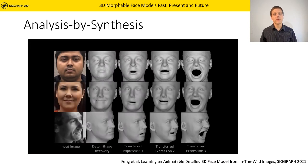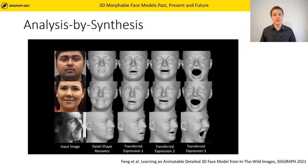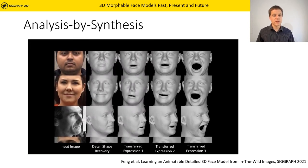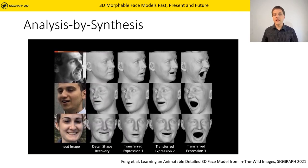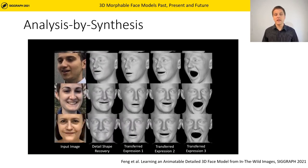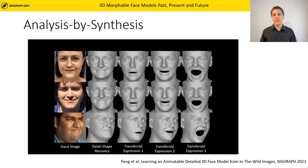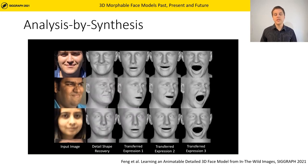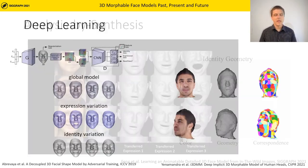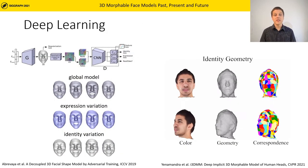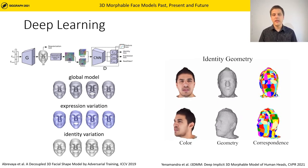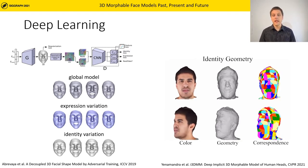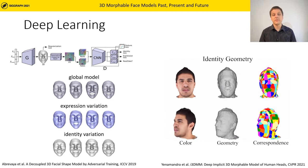A main focus of the community over the years was to improve the 3D reconstruction from 2D images. The results you can see here are achieved by DECA, a method also presented at this year's SIGGRAPH. Especially the new possibilities of deep learning methods enabled several breakthroughs on the modeling side as well as on the model adaptation side.